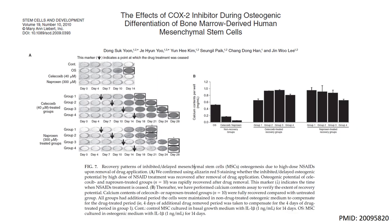Interestingly, the authors reveal that this inhibition of osteogenesis by NSAIDs is reversible. When these two drugs are added to culture, osteogenic differentiation does not occur. However, when these drugs are placed in culture for a period of time and then removed — indicated in this figure by these arrows — we can see that two weeks later, mineralization does occur in both the presence of celecoxib as well as naproxen. This implies that while osteogenesis cannot occur in the presence of NSAIDs, once NSAIDs are removed from the environment, these MSCs are capable of differentiating into bone.